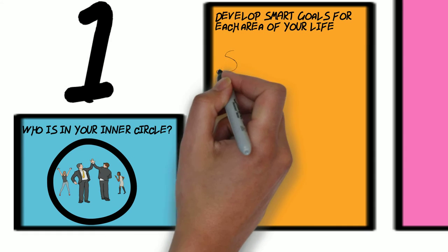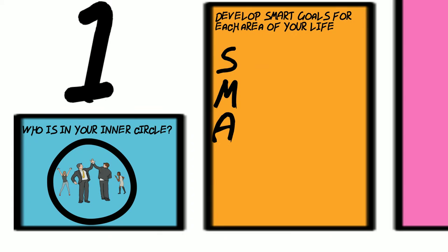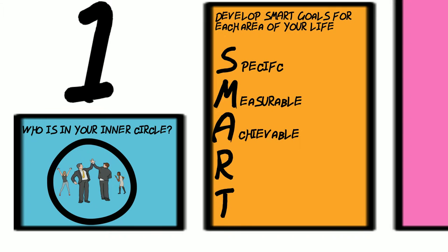Step two is develop SMART goals — S-M-A-R-T — in each area of your life. Know specifically what your goal is and know how you are going to measure it. Make sure that you can attain it with the help of your inner circle, and make sure that your goal is realistic. If someone else has done it, then it is. Put your stake in the ground for time — when are you going to have achieved this goal?